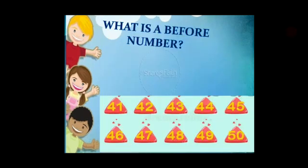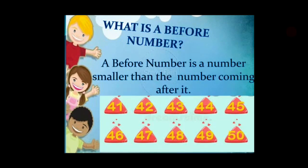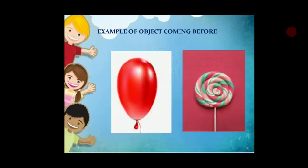What is a before number? A before number is a number smaller than the number coming after it. Now let's see with the help of some objects.